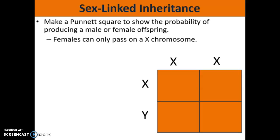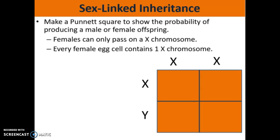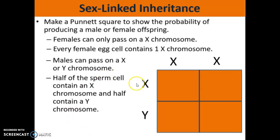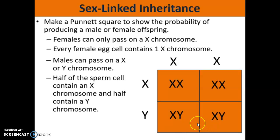Remember that females, even though they have two X chromosomes, can only pass on one of the two X chromosomes. When females pass on their X chromosomes, they create egg cells, which means every single egg cell is going to have exactly one X chromosome. When it comes to males, they have one X and one Y chromosome, so when males create sperm cells, half will contain the X chromosome and half will contain the Y chromosome. Filling out this Punnett square, we see a 2 in 4 chance of the genotype XX (female) and a 2 in 4 chance of XY (male). So it's always a 50% chance of whether you get a male or female child.